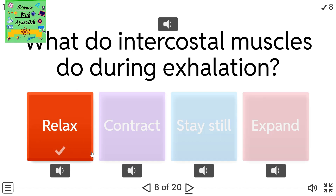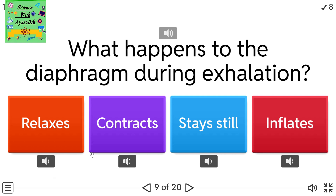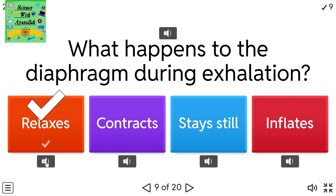What happens to the diaphragm during exhalation? A) Relaxes. B) Contracts. C) Stays still. D) Inflates.